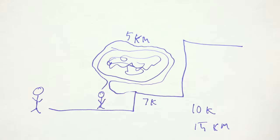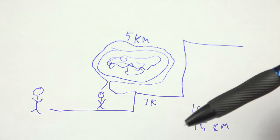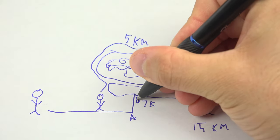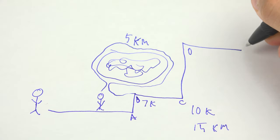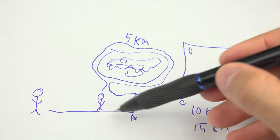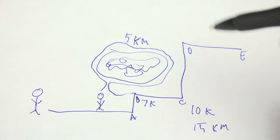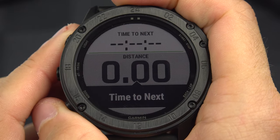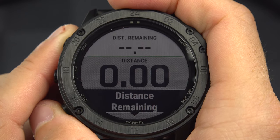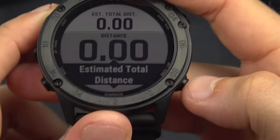What's a waypoint? When you do a course, at certain points you have waypoints — A, B, C, D, E. The field would tell you the last waypoint is E, and if you are here, the next waypoint is A, then B, then C, and so on. So you can see the time remaining to the next waypoint and the distance remaining for all of the course.